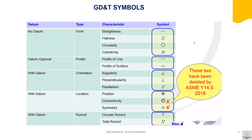GD&T symbols: There are five types of GD&T symbols — form, profile, orientation, location, and run out. The big four are form, orientation, location, and run out.